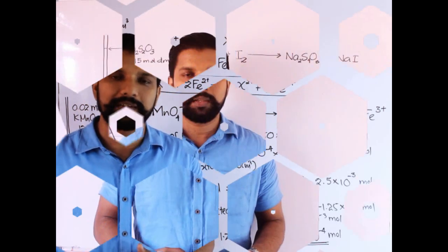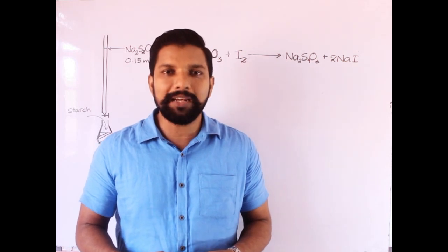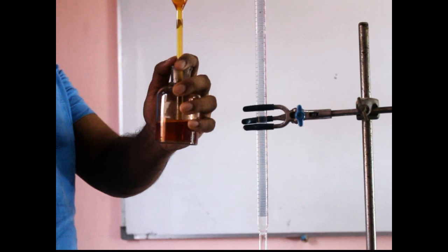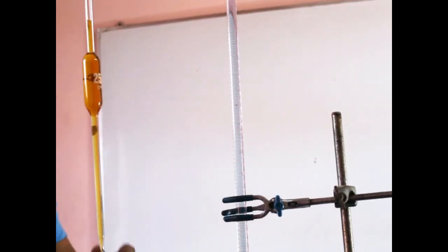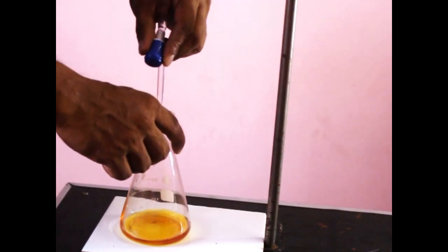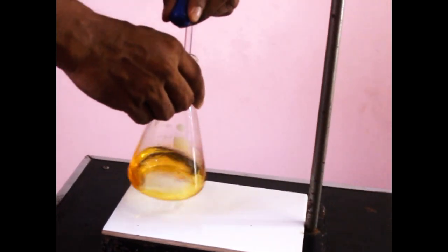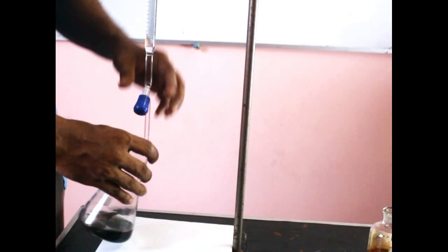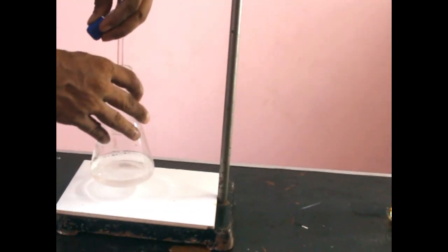Iodine is another method used in redox titrations — iodometry. An aqueous solution of iodine is titrated with sodium thiosulfate solution. We measure 25 cm³ of the aqueous iodine solution and transfer it into the conical flask. A special feature of this titration is that the starch indicator is not added at the beginning. First, add thiosulfate solution drop by drop until the brown color goes pale yellow, then add starch — the solution turns blue-black and titration continues.